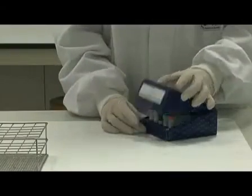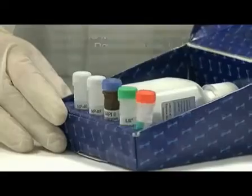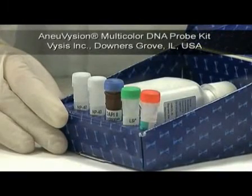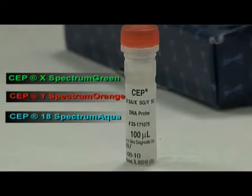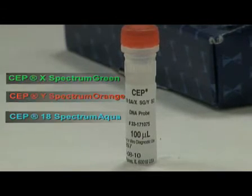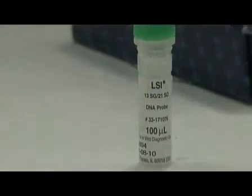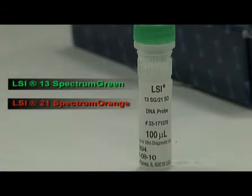To analyze these chromosomes, we will use a multicolor DNA probe kit from VYSIS. This contains one vial with a probe combination for the alpha satellite region of chromosomes X, Y and 18, labeled green, orange and aqua respectively. And another vial with a combination of probes for chromosomes 13 and 21, labeled green and orange respectively.